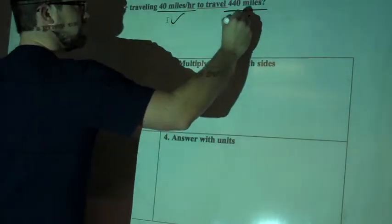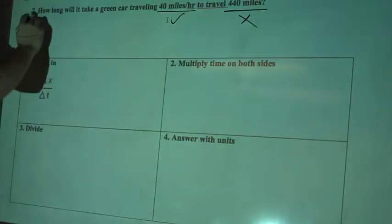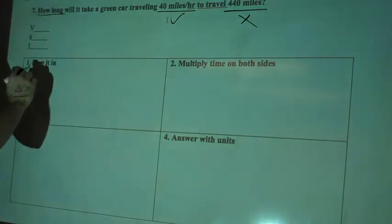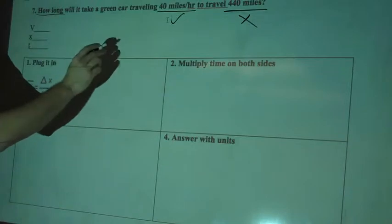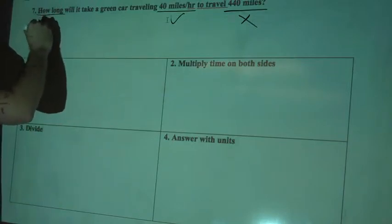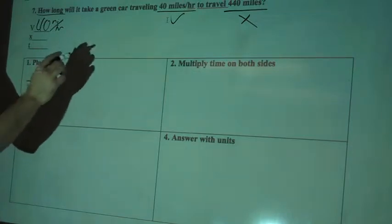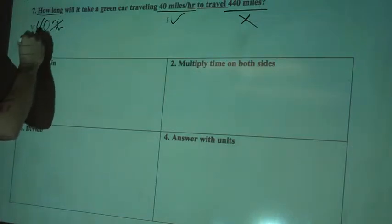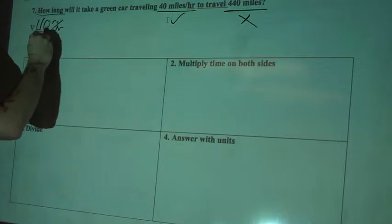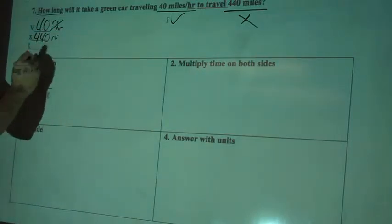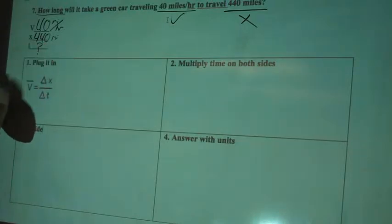440 miles is a distance, so I'll write X into that. And then it says how long, let's talk about time. So 40 miles per hour is my velocity. So I'll write 40 miles per hour. Travel 440 miles, so my distance is 440 miles. And my time, I don't know, we're trying to calculate that, so I'll put a question mark there.